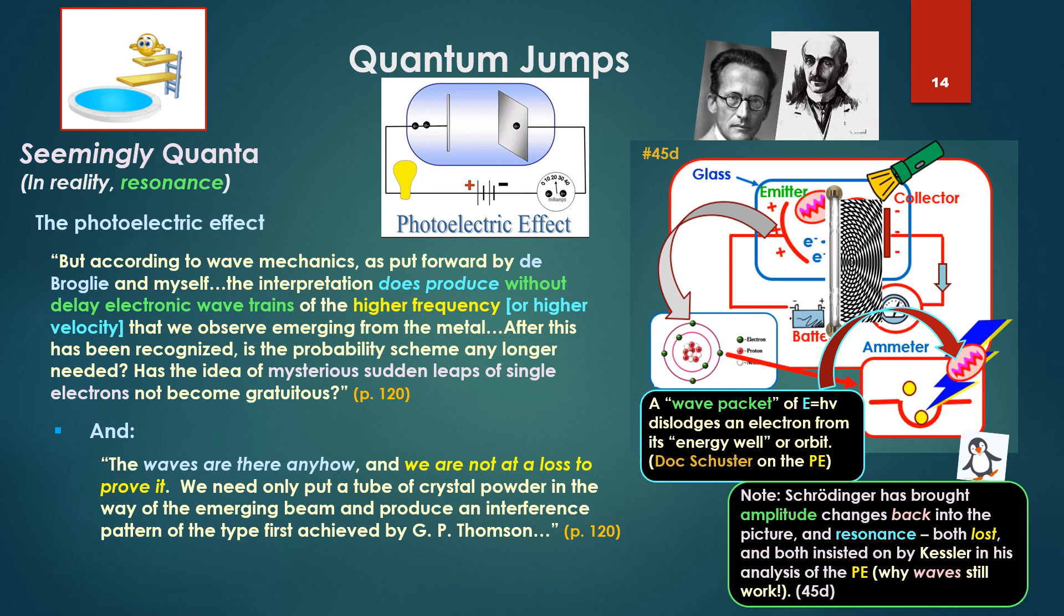Note, Schrödinger has brought amplitude changes back into the picture and resonance, both lost, as we noted in 45D, and both insisted on by Kessler in his analysis of the photoelectric effect, trying to show why waves still work.